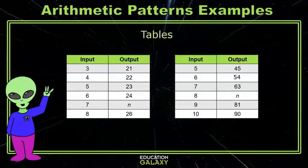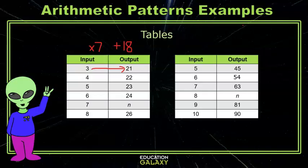Sometimes we have to recognize patterns in tables. Let's look at this first table. Going from 3 to 21, it's increasing. That means we're either going to multiply or add. I can get to 21 from 3 by multiplying by 7, or I could add 18. To see which one is the correct rule, let me see which one works for the rest of the values of the table.